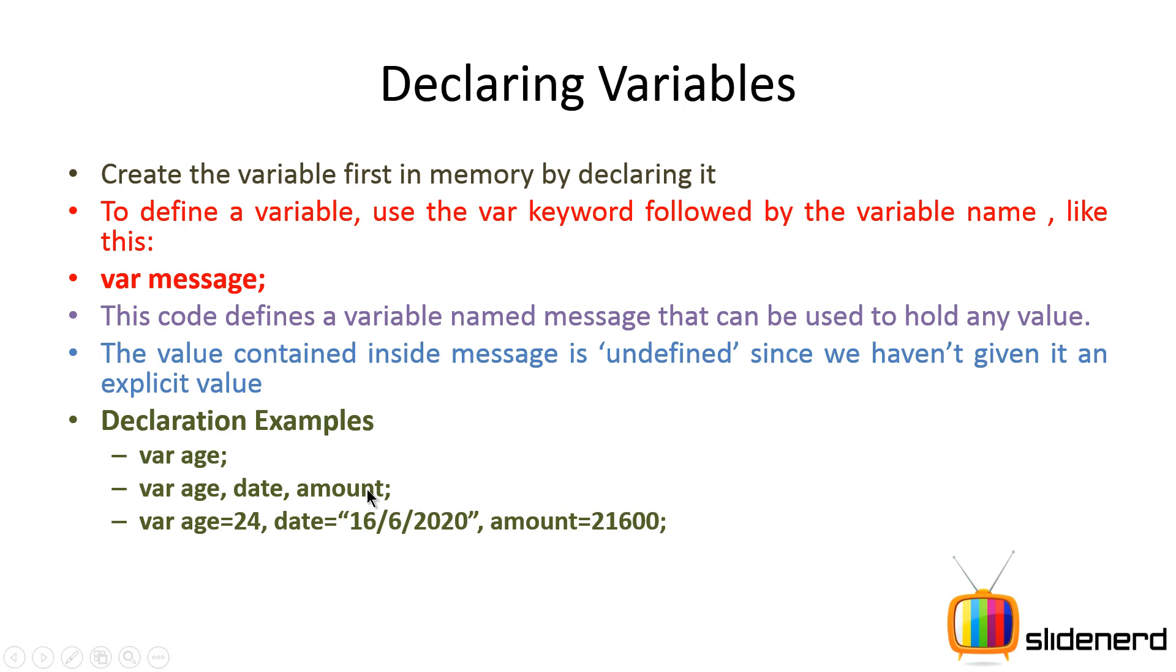The third statement: age is 24, date is 16 6 2020, amount is 21600. In these three statements you are giving three separate values to three separate variables which are going to be stored on your RAM.